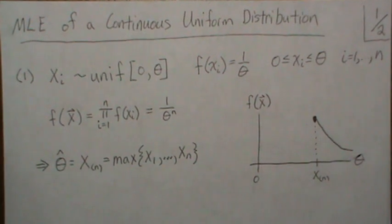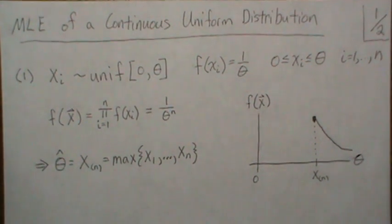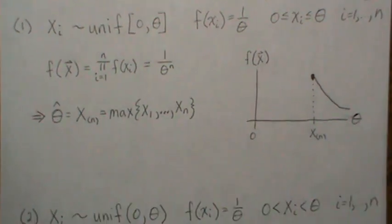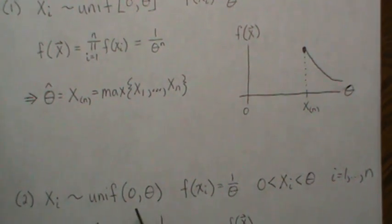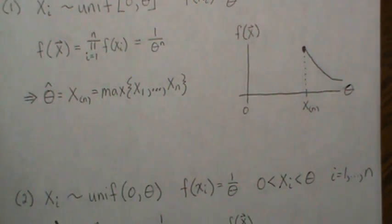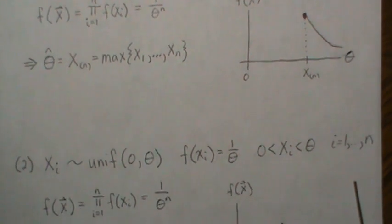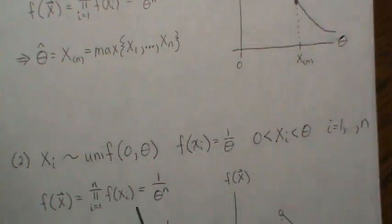Now here the situation is very similar. So it's a uniform from zero to theta, so the density is 1 over theta, but here there's no equal sign. So the Xi has to be strictly between zero and theta, for i equals 1 to n.